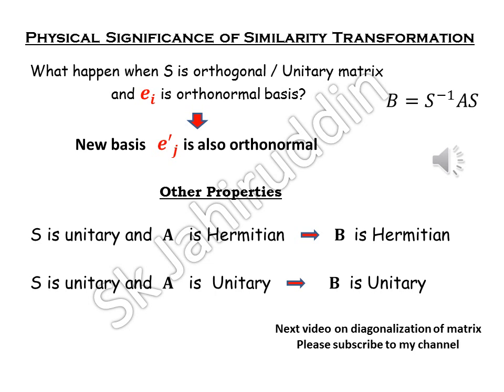I will repeat. You have an orthonormal basis in which you have represented one matrix. Then you transform that matrix by an orthogonal or unitary matrix, which is S matrix. Your new basis, in which your B will be written, will also be an orthonormal basis. So, the orthonormality of the basis is preserved.